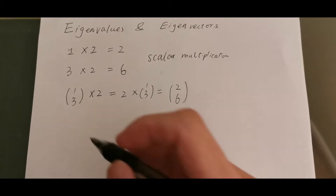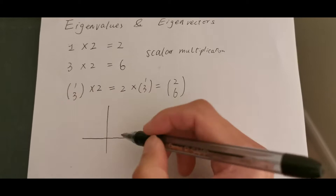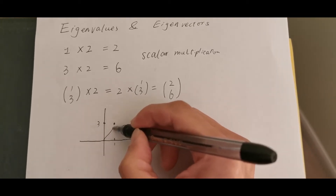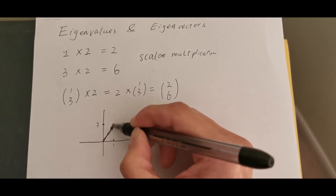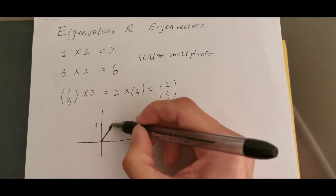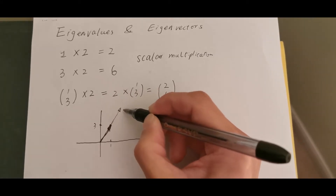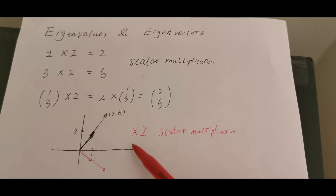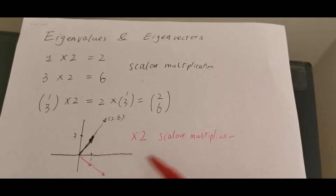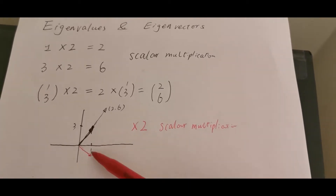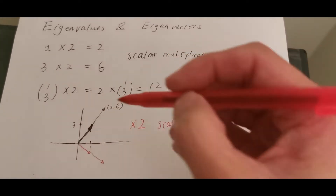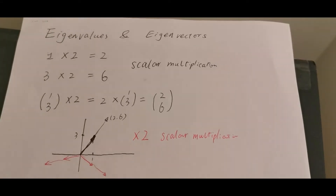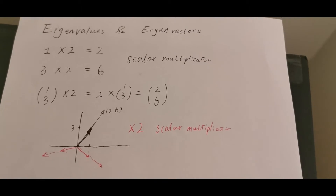However, it has a geometric meaning. Let's plot this in a 2D plane. The vector [1, 3] is plotted here, and when we multiply by 2, we're basically doubling the vector to [2, 6]. This is a doubling operation — multiplying by 2 scales anything by 2. If we have any vector, what it does is make it twice as long. So multiplying by 2 has a geometric meaning when we look at the vector space.